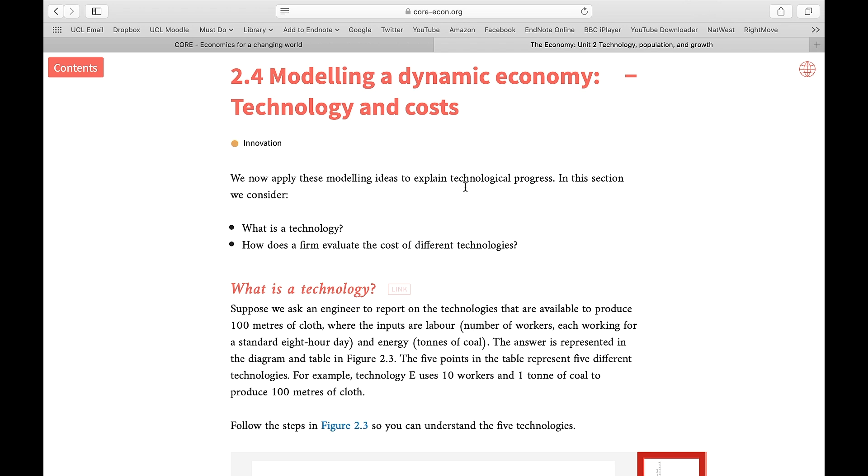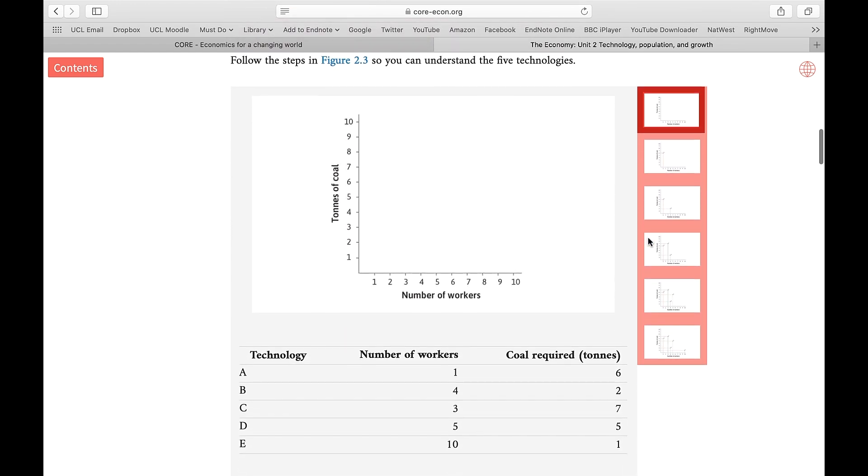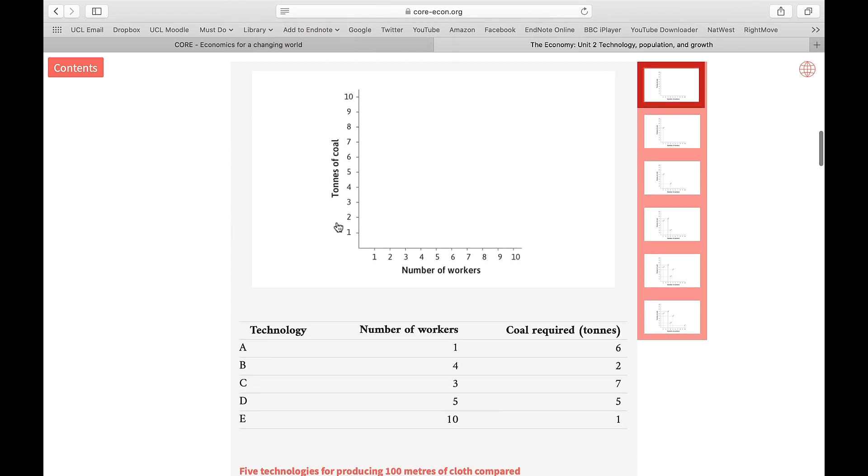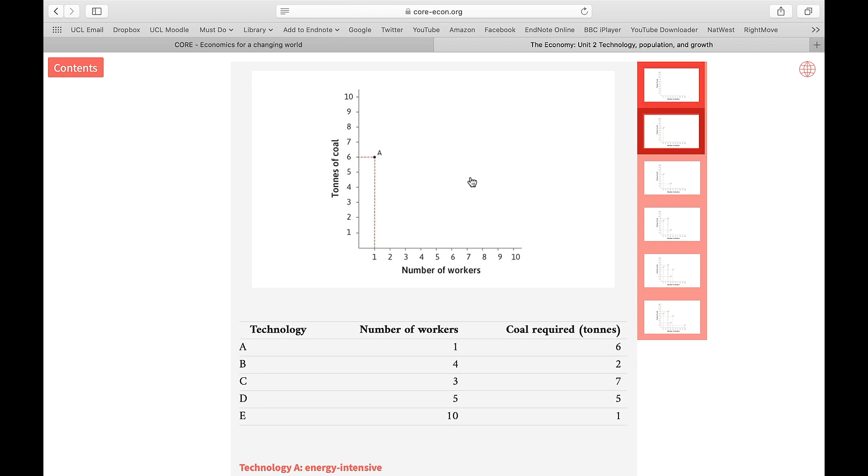Now, how do we represent the energy-intensive technology you've seen in the movie in a graph? Let's scroll down here. Let's represent the technologies on the basis of two factors. The amount of energy they use. Here we have an example of tons of coal. You can replace it with kilowatt of electricity or barrel of oil. So the y-axis is the energy that the technology uses. The x-axis is the number of workers. And we can represent an energy-intensive technology in this way.